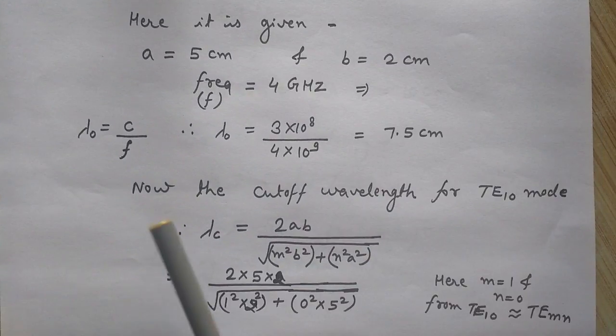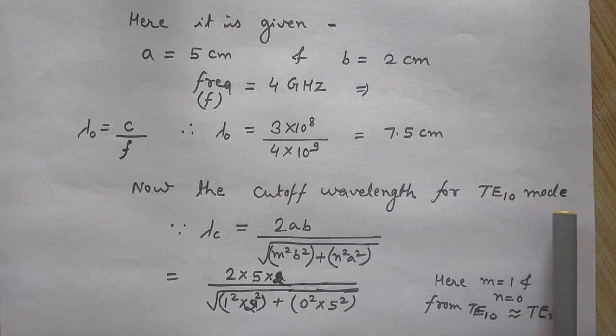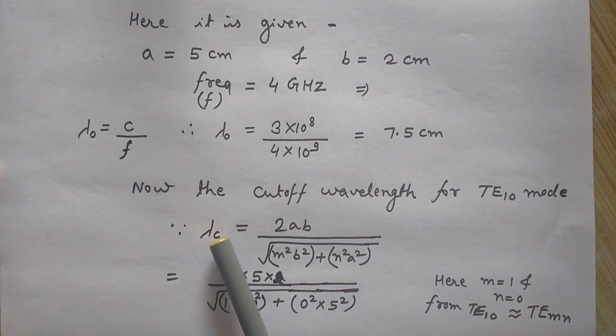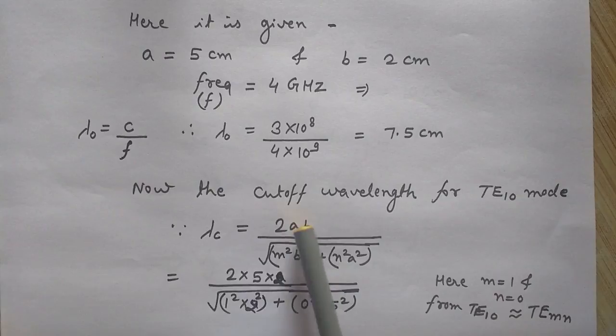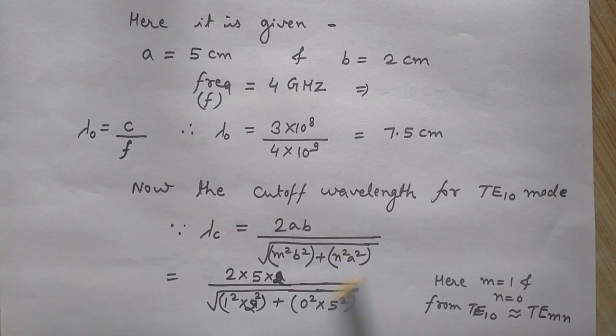Now, the cutoff wavelength for TE10 mode is given by lambda C, C stands for cutoff. So lambda C, it is a formula 2AB divided by under root of M square B square plus N square A square.